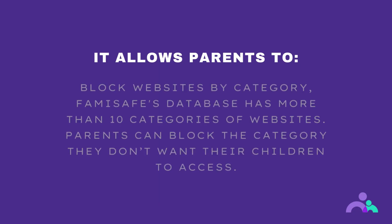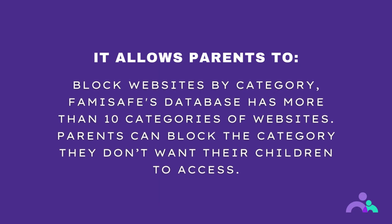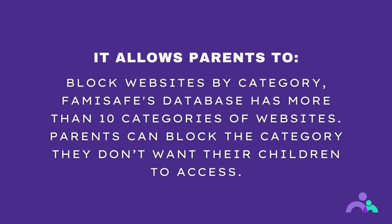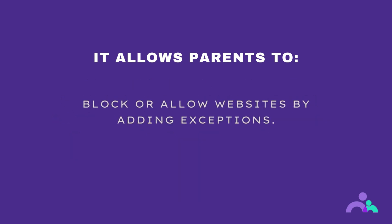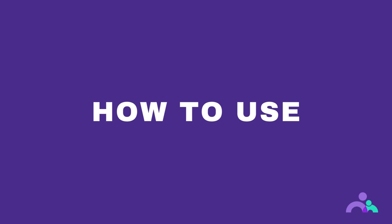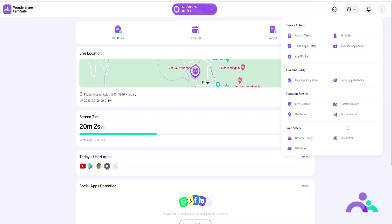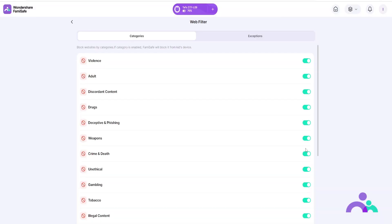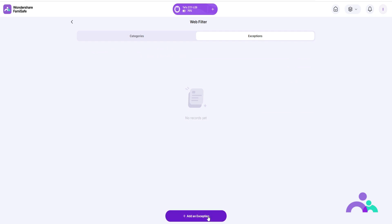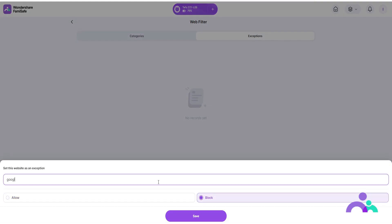Web filter. The web filter allows parents to block websites by category. Famisafe's database has more than 10 categories of websites. Parents can block the category they don't want their children to access, or block and allow websites by adding exemptions. How to use. Step 1: click the menu then click web filter. Step 2: under categories, toggle on the website category switch you would like to block. Step 3: click exception then add an exception to add a website and choose whether to block or allow access to it. Then click save.